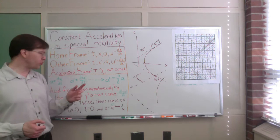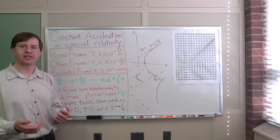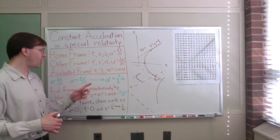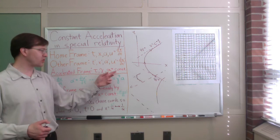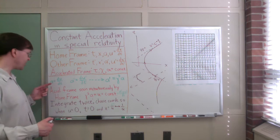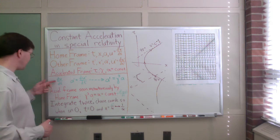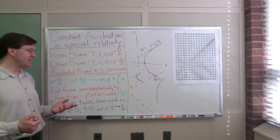Those are the coordinates we can deal with in special relativity. For the accelerated observer, we can calculate tau, their proper time. I'll call distances measured by this accelerated observer chi — a Greek letter that looks a bit like x. The constant acceleration felt by the accelerated observer I'll call alpha. So acceleration a = du/dt in our home frame, and a' = du'/dt' in the other frame.